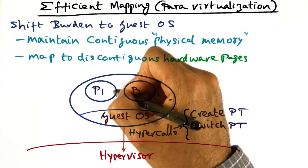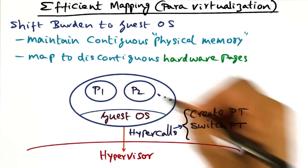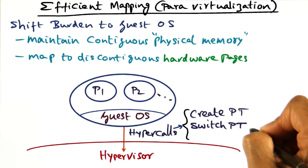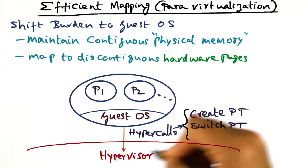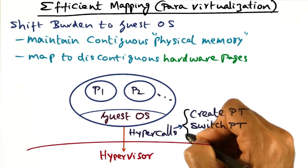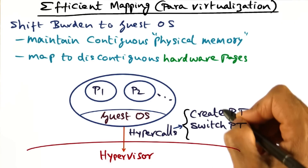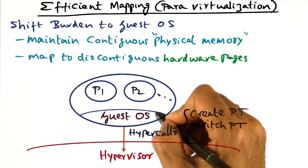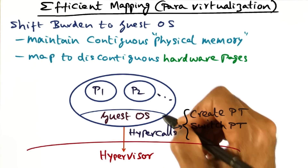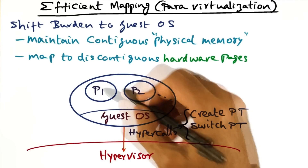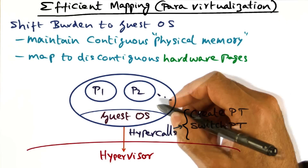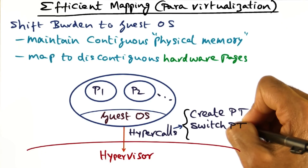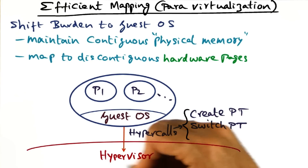When the guest operating system has to run a particular process that just got launched, it can make another hypercall to the hypervisor saying, please switch the page table, and here is its location. The hypervisor doesn't know about these processes — all it understands is a hypercall that says change the page table from whatever it used to be to this new one. This essentially results in the guest OS switching the address space of the currently running process on bare metal. Xen will do the appropriate thing of setting the hardware register of the processor to point to this page table data structure in response to the hypercall.